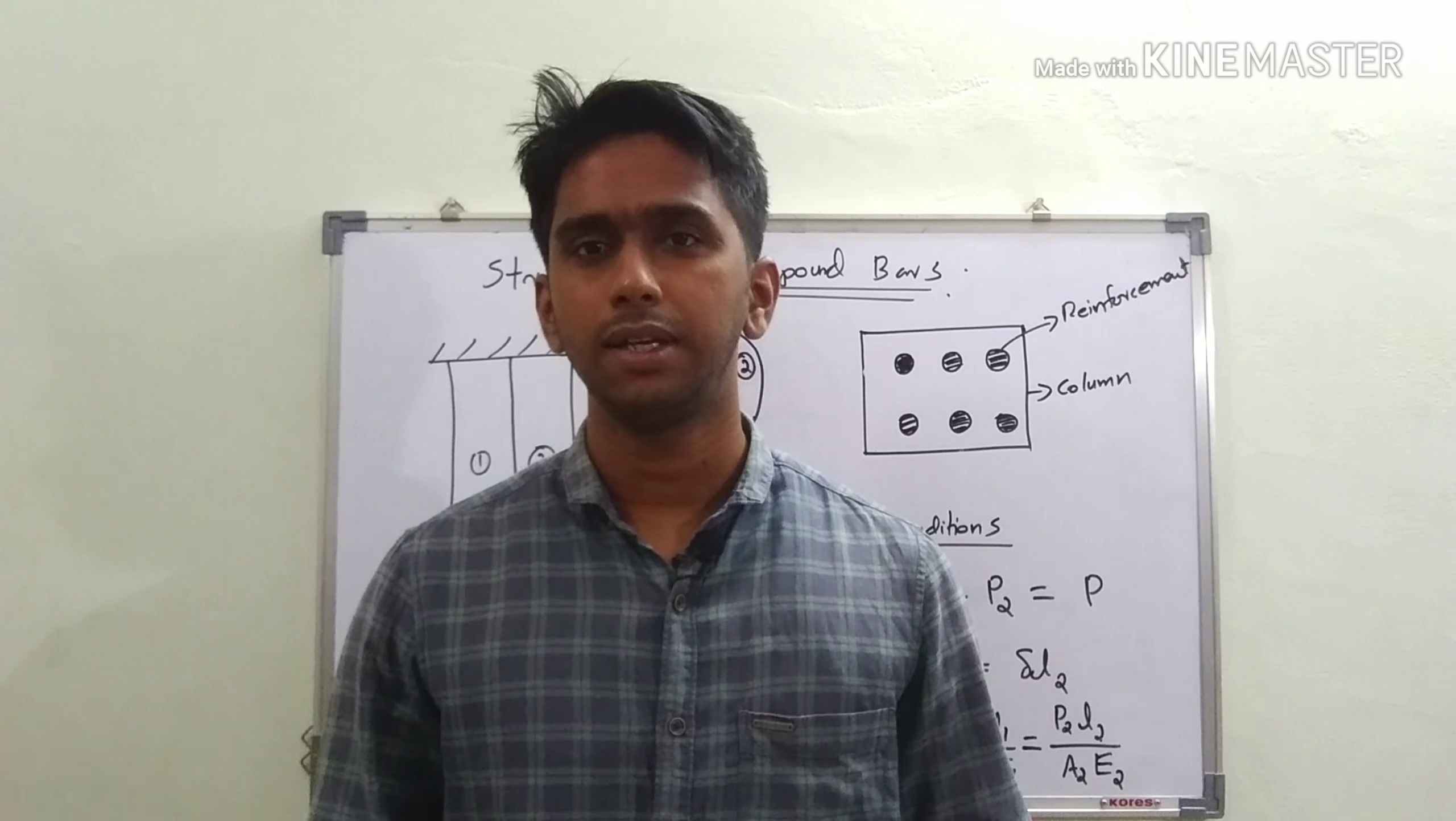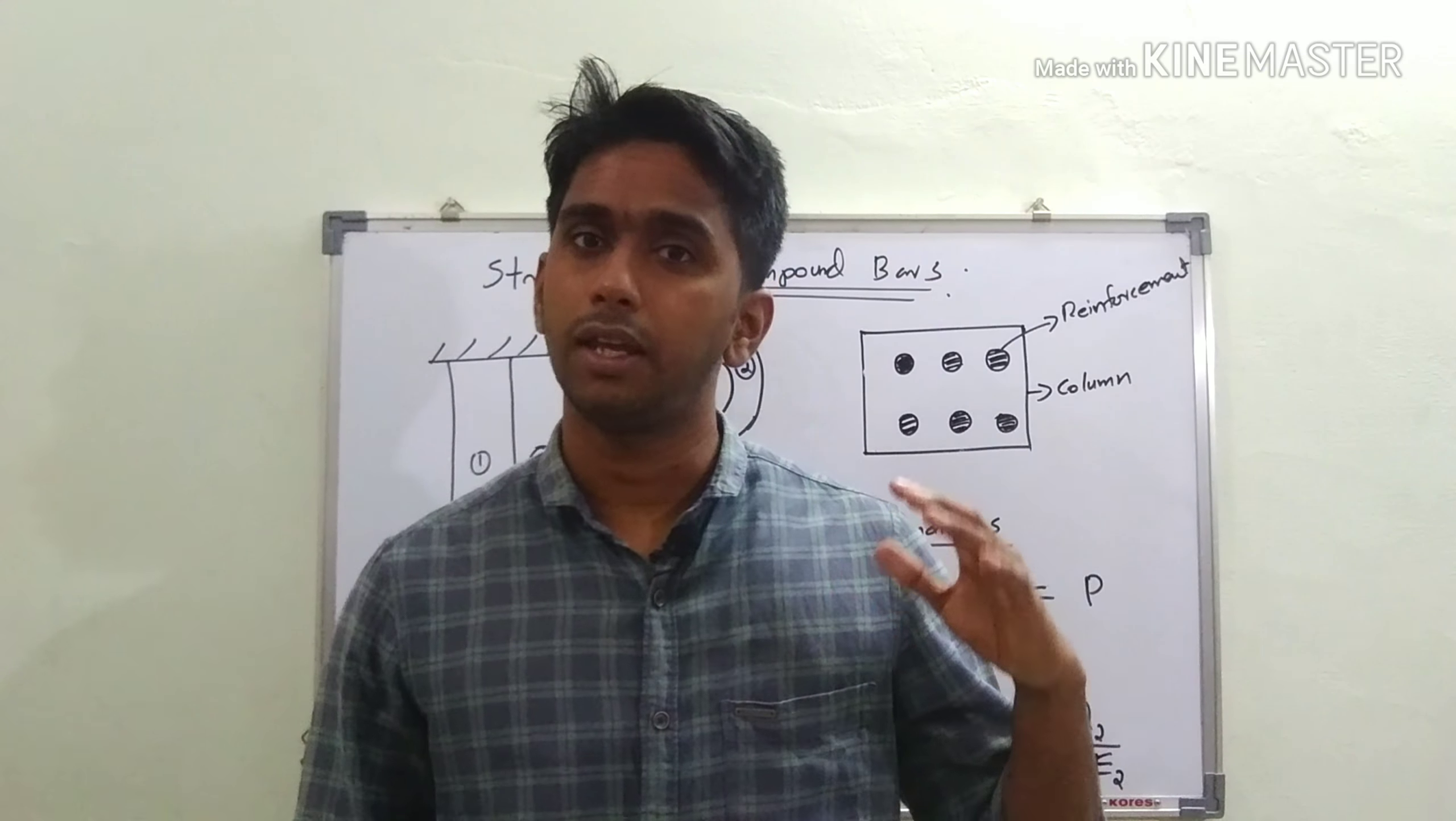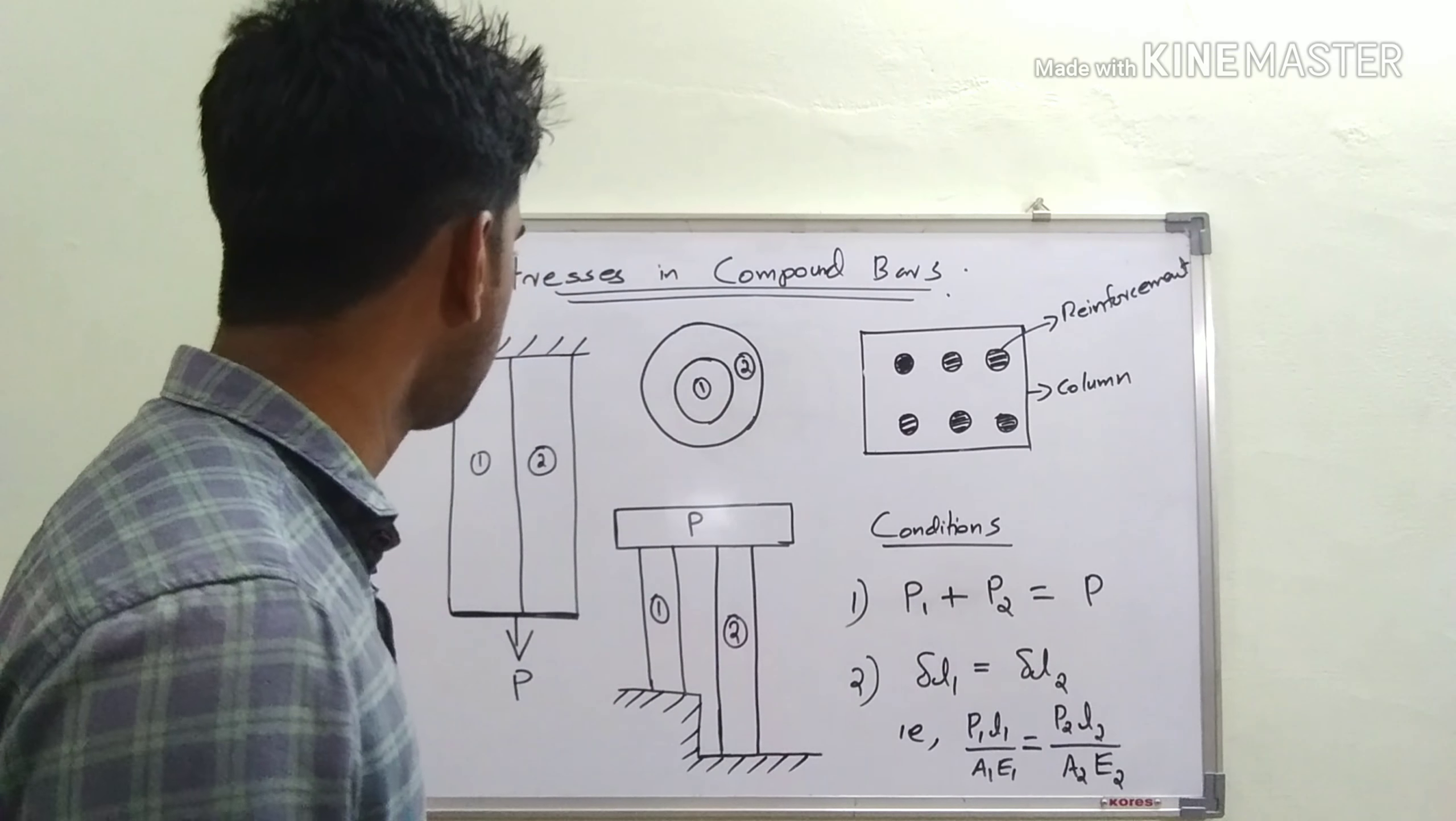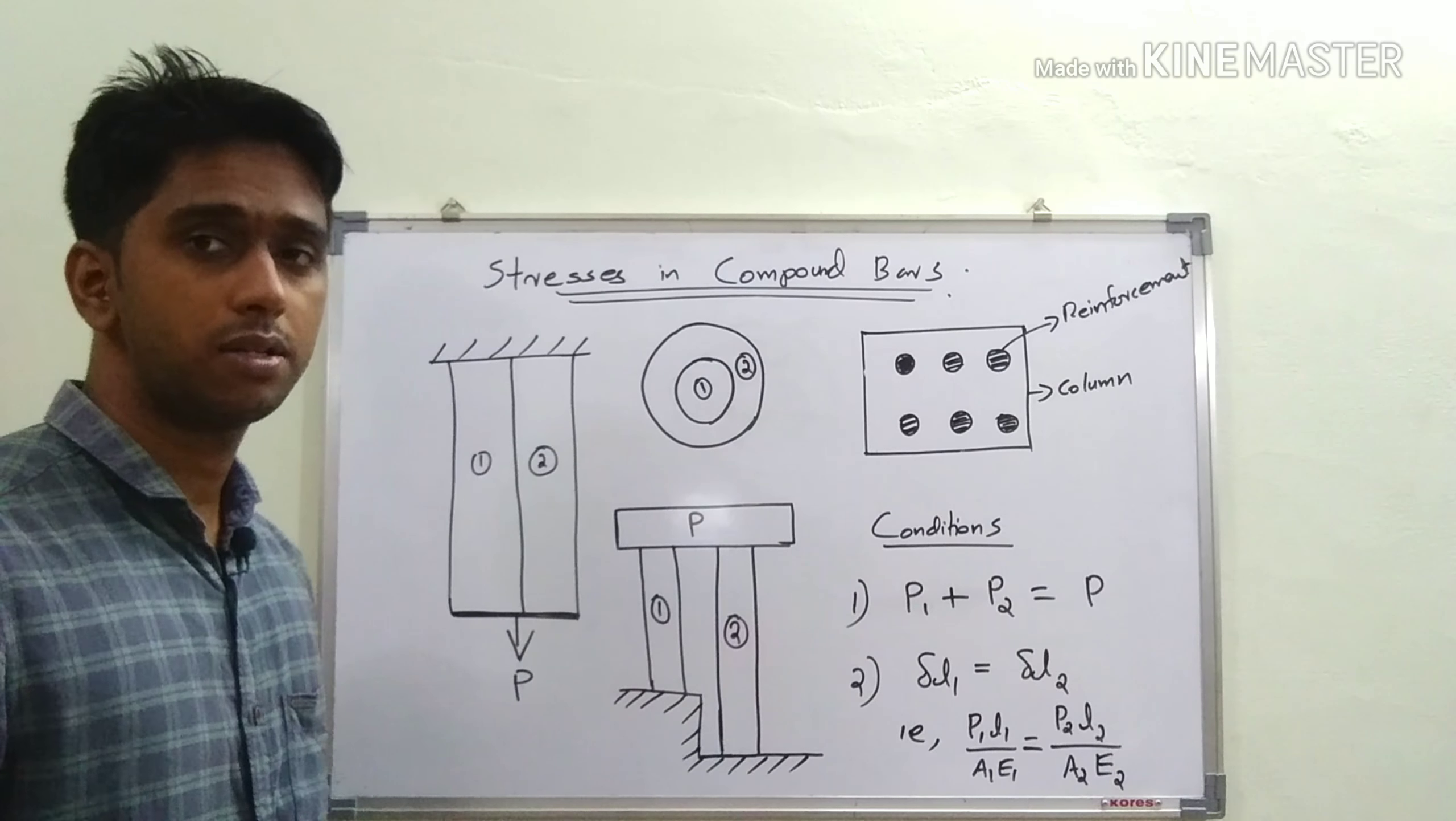A composite bar is made of two or more different materials in such a way that they deform as a single unit. That means they elongate or contract as a single unit.